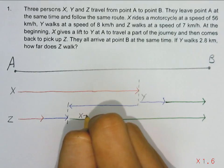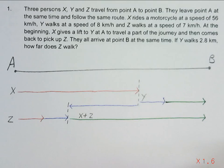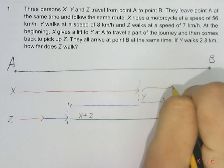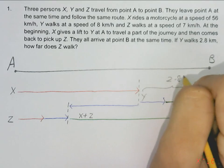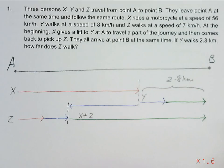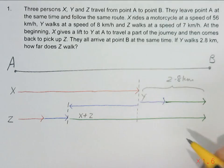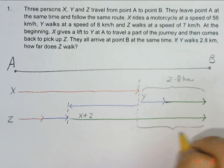So this will be the journey taken by X and Z, which is X's speed. Now it's given in the question that Y walks a distance of 2.8 km. So we can bring down this meeting point and say that this will also be 2.8 km.